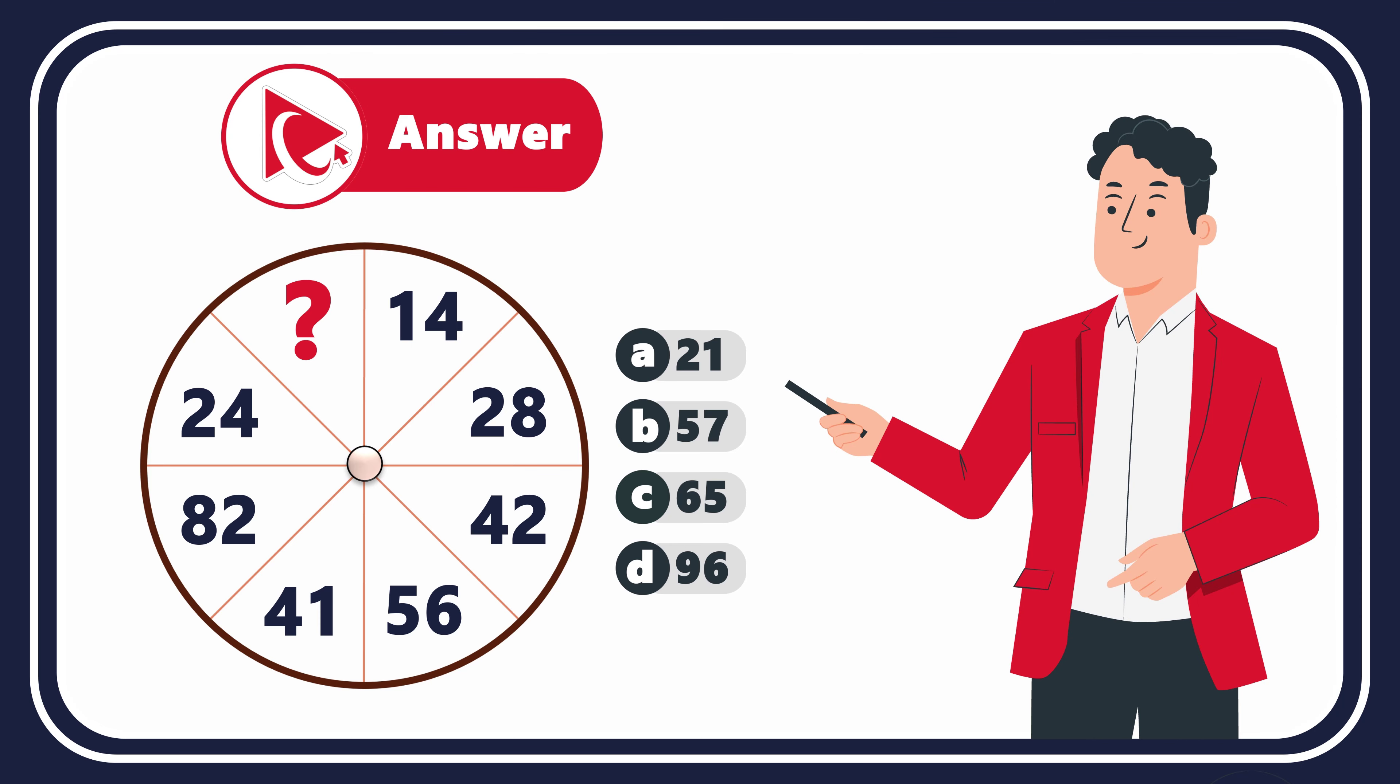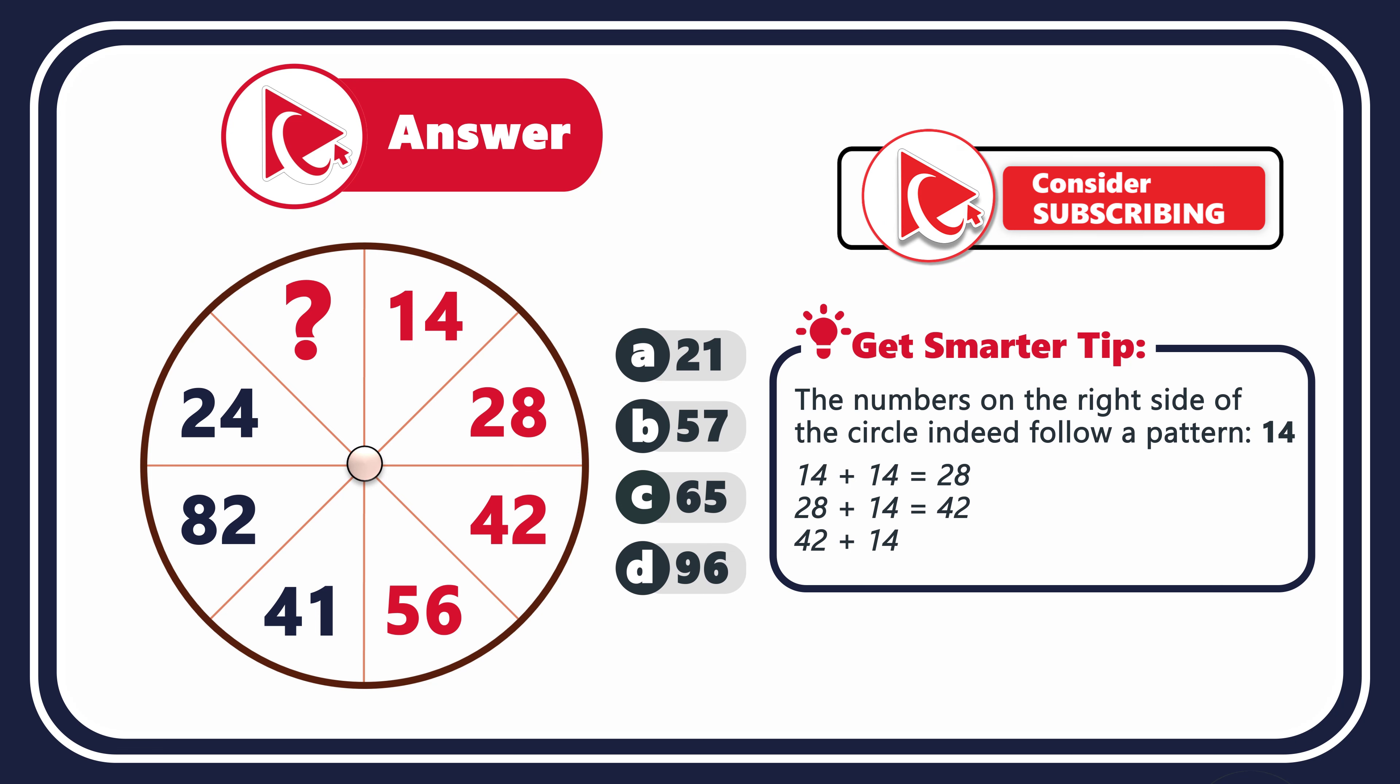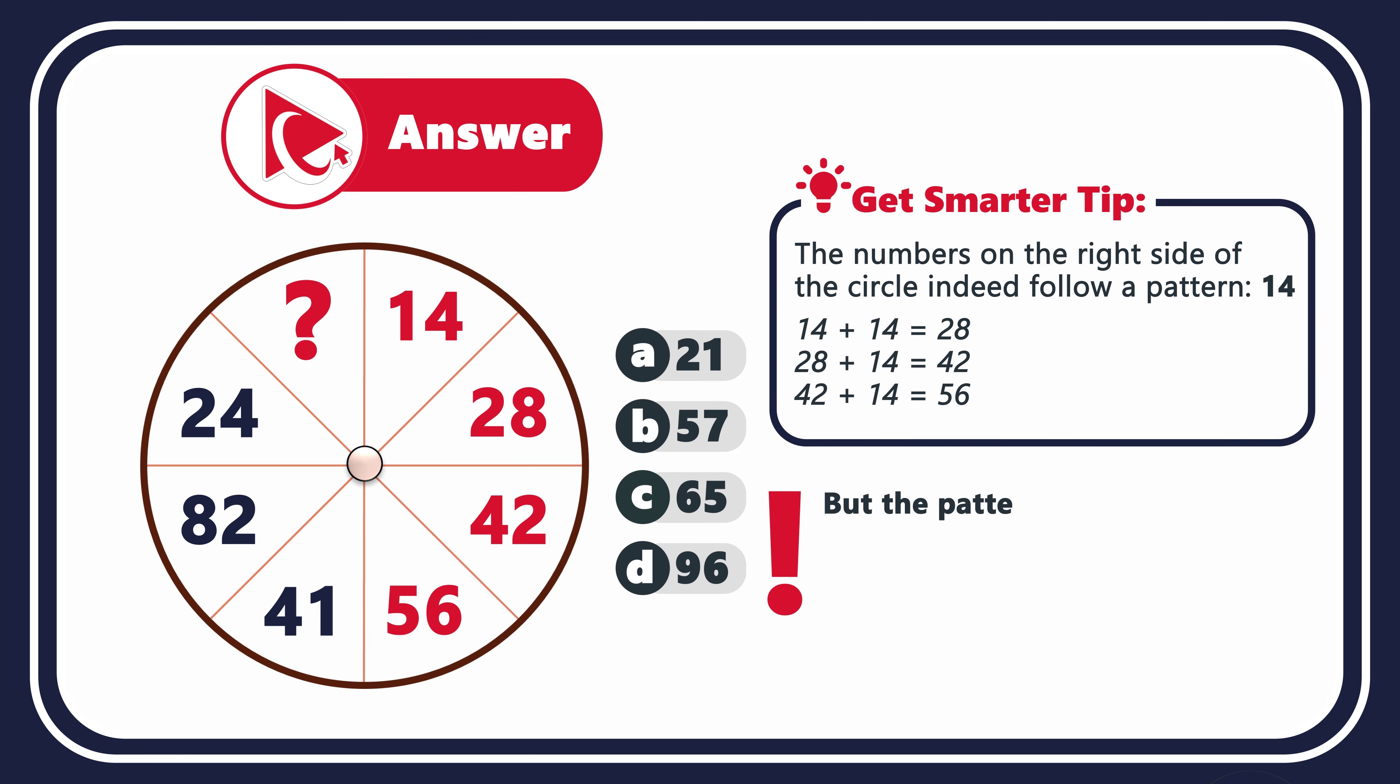Remember I told you that this question is tricky. Let's look in details why the answer is not obvious. Let's look at the numbers 14, 28, 42, and 56. As you can see, they all increase by 14. 14 plus 14 equals 28. 28 plus 14 equals 42. And 42 plus 14 equals 56. But then this pattern breaks, and you see numbers 41, 82, and 24. Unfortunately, this pattern is misleading and it's there to confuse you.